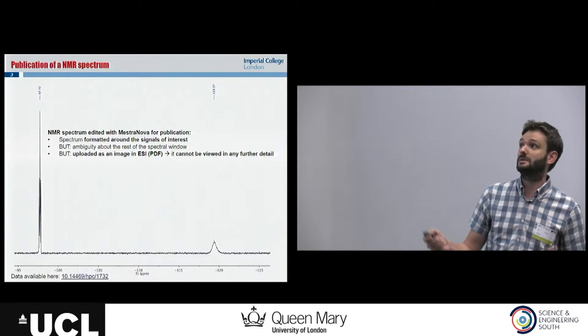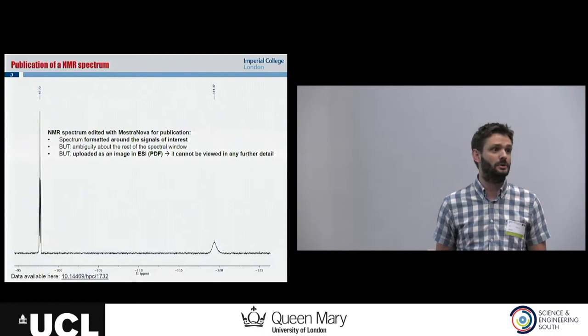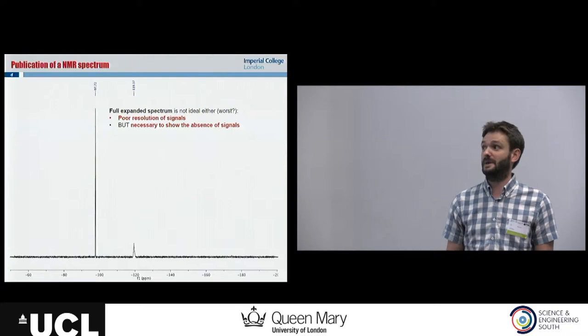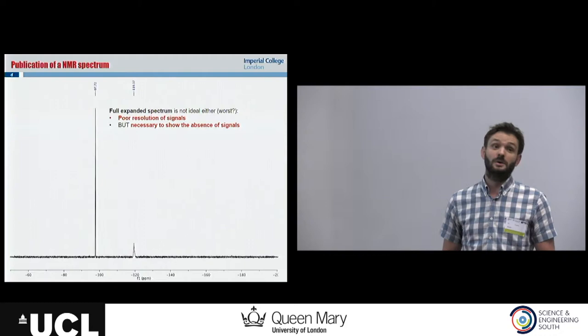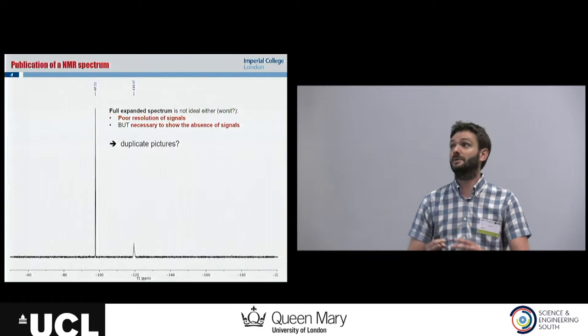Because it's uploaded as a picture, we can't get any further details. Alternatively, we can publish the full spectrum, but in that case we lose all the resolution about the sharp peak. The solution, as usual, is we duplicate pictures: we make one zoom, a short picture, then the full spectrum. And that's how we end up, at the end, with supporting information of 50 or 100 pages.